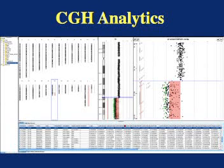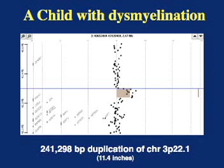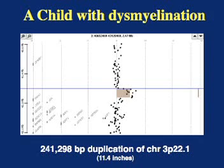This ability to detect small deletions and duplications anywhere in the genome in a single experiment has had some unexpected consequences. We were using the microarray technology to look for people with very small, previously undetectable 18q deletions. These children have a single feature often found in people with 18q minus. In this study, we recruited children with dysmyelination of the brain and no other known syndrome. This child was found to have a small duplication of chromosome 3p. As a control for the experiment, we also performed the same microarray experiment on the DNA for this child's parents, in order to correlate the dysmyelination in the child with a unique chromosome change.